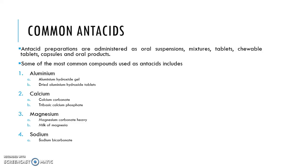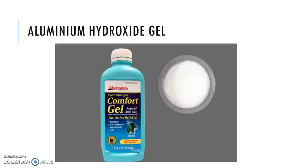The common antacids are as follows — there are four types: one, aluminium; two, calcium; three, magnesium; and four, sodium. We will look at each of them. For aluminium, there are two types: aluminium hydroxide gel and aluminium hydroxide tablet.